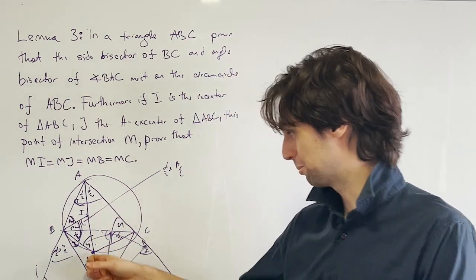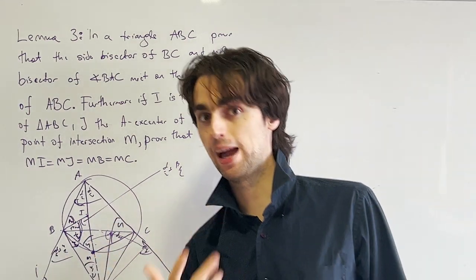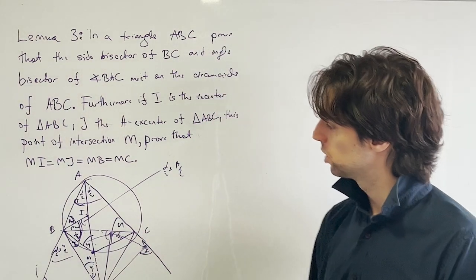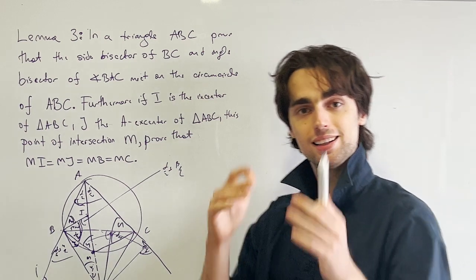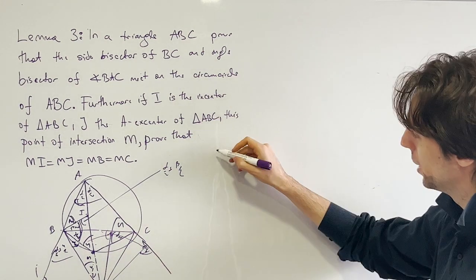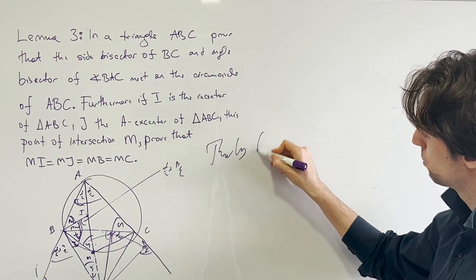Because once you have a point on the circumcircle, mind you, you have a lot of angles with the other points, which is what makes this whole thing useful as a lemma. And this finishes up our problem. And as always, thanks for problem solving.